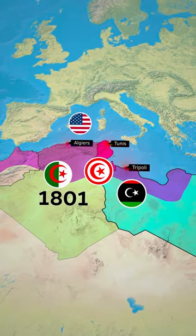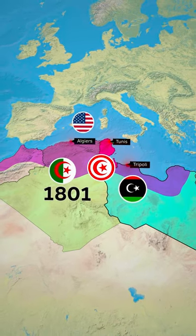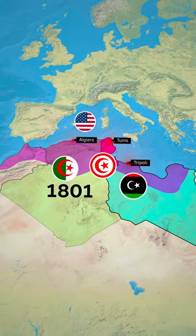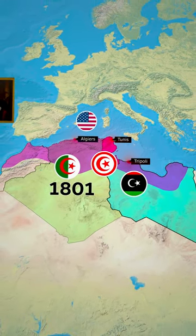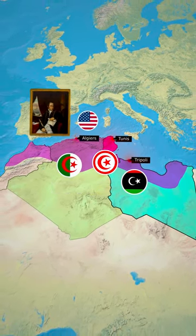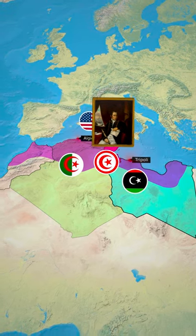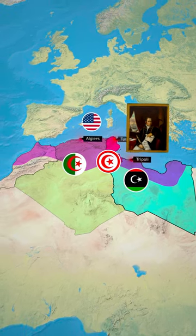The United States Navy, under the command of Commodore Edward Preble, launched a series of successful attacks against the Barbary pirates, culminating in the capture of Tripoli in 1805.